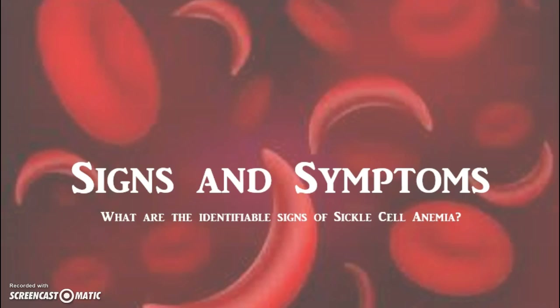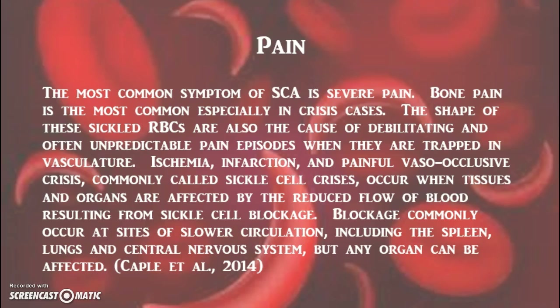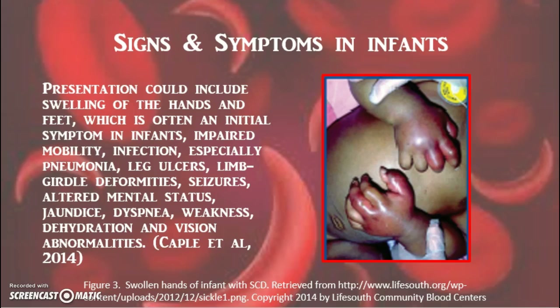What are identifiable signs of sickle cell anemia? Persons with sickle cell anemia frequently have severe pain episodes referred to as sickle cell crisis. These pain crises occur when sickle-shaped red blood cells affect tissues and organs, usually causing blockages in narrow areas of blood flow. Figure 3 shows yet another symptom: swelling of the hands and feet, which are usually visual signs found in infants with sickle cell anemia.